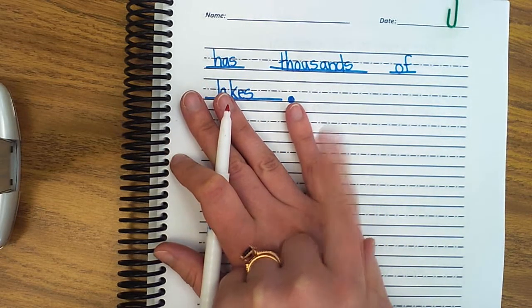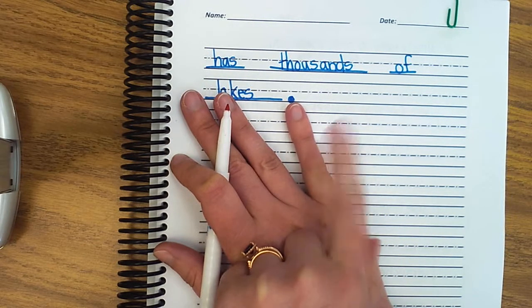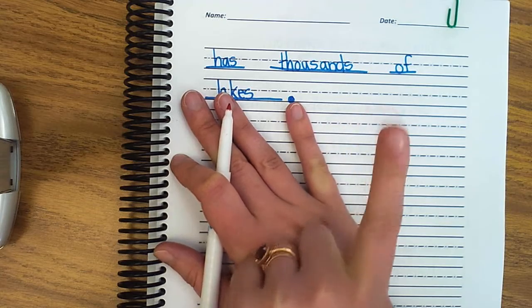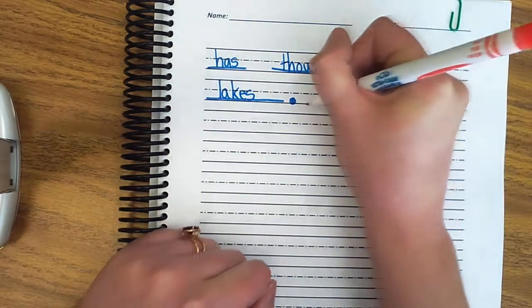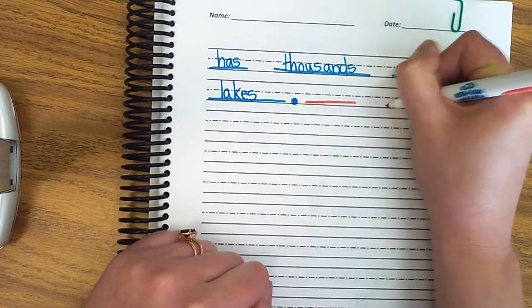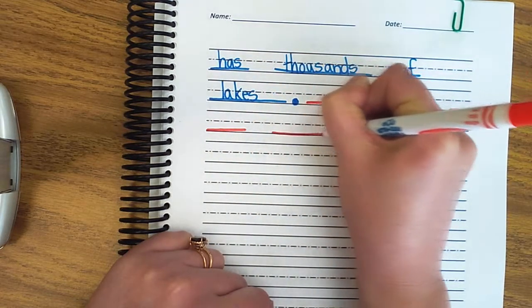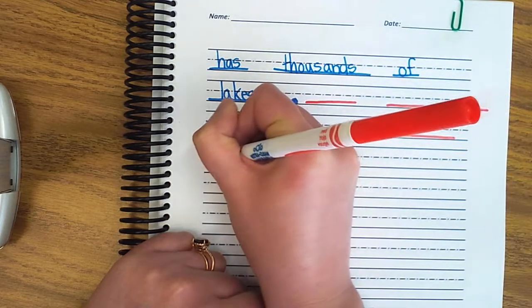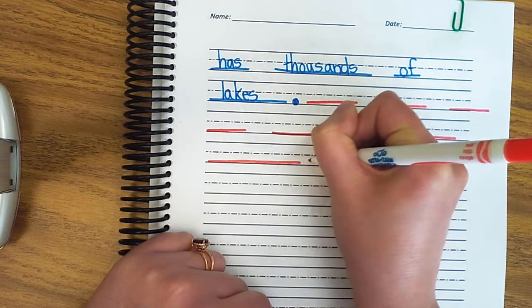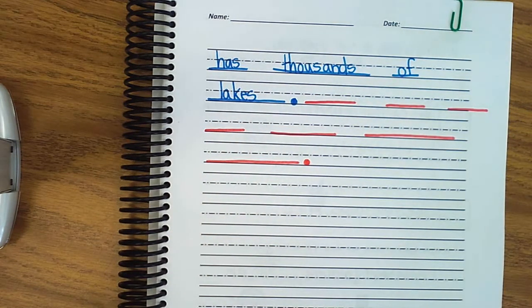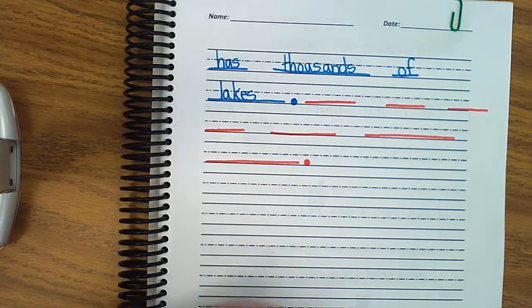Here's my closing sentence. Now you know all about Canada's landforms. Here I go. Now you know all about Canada's landforms. Period at the end. And now all I have to do is go back and fill it in.